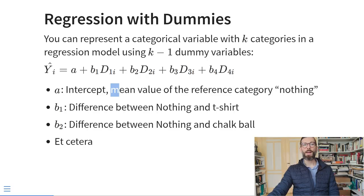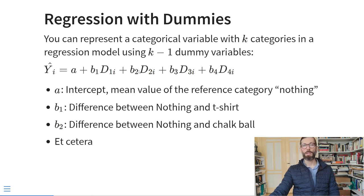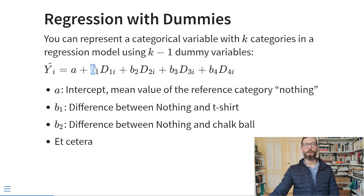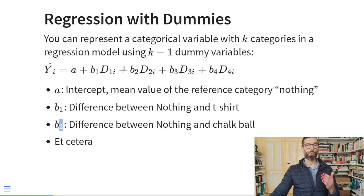As covered in previous lectures, you could conduct linear regression with dummy variables, representing a categorical variable with k categories using k minus one dummies. We have an intercept a — the mean hang time for the reference category — and slopes b1 through b4, each telling us the mean difference between the reference category and the category coded by that dummy. For example, b1 is the mean difference between the nothing group and the t-shirt group, b2 is the difference between nothing and the chalk ball group, etc.